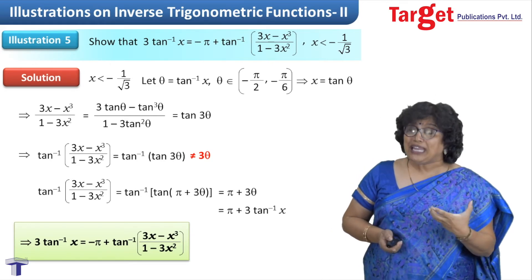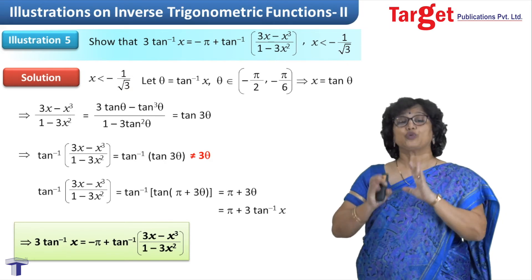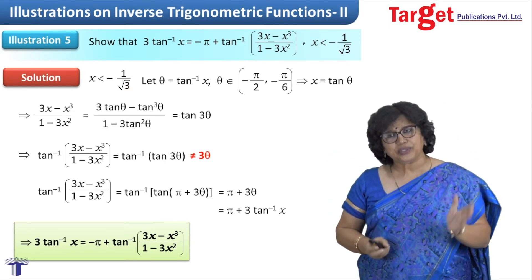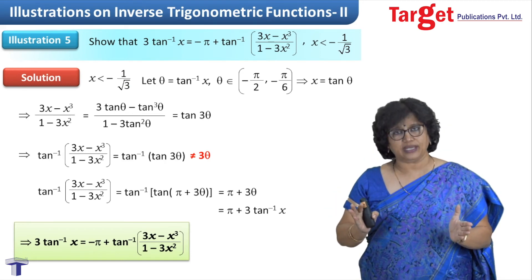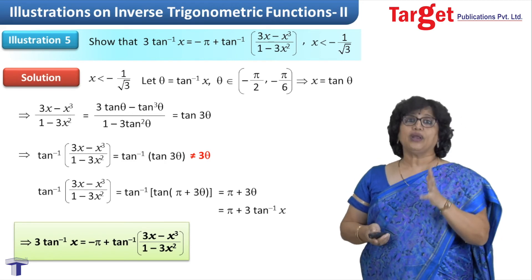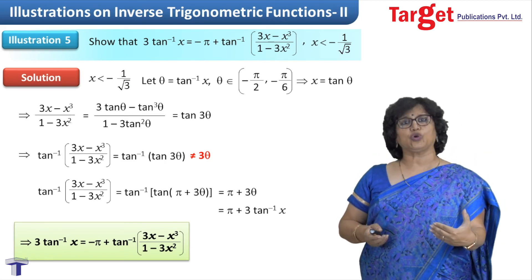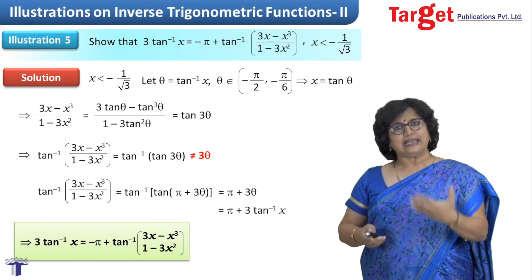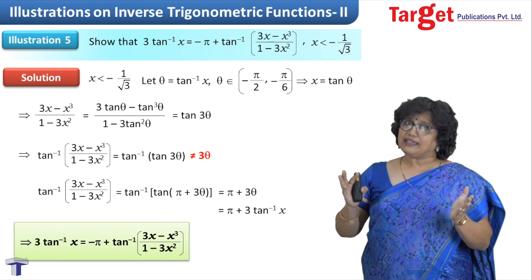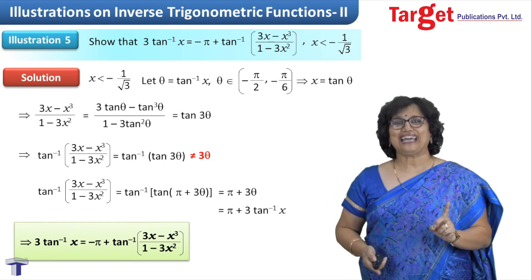This result is only for x < -1/√3. So in all possibilities we have covered: x < -1/√3, x between -1/√3 and +1/√3, and x > 1/√3 — all three cases for tan⁻¹. We have also done questions on sin⁻¹ and cos⁻¹. Please keep revising this, and I will be coming in the next session with something new. Till then, stay tuned. Thank you.